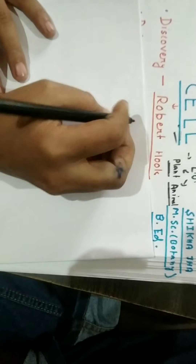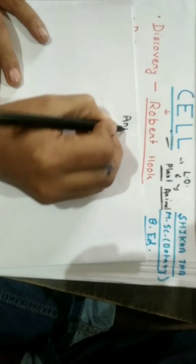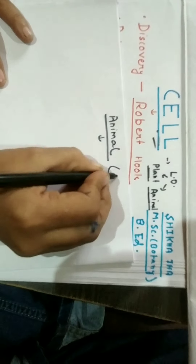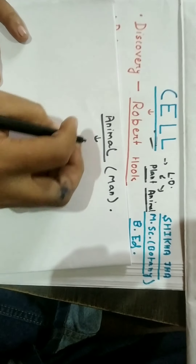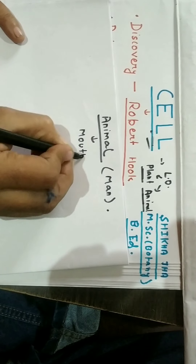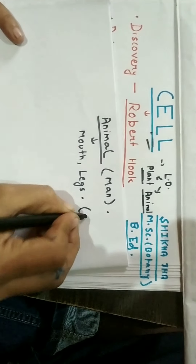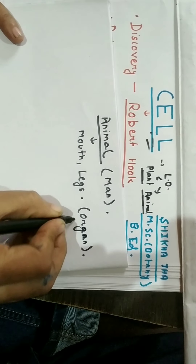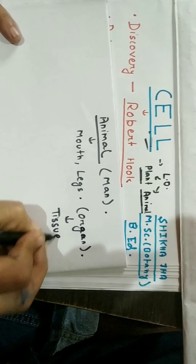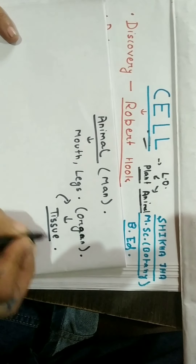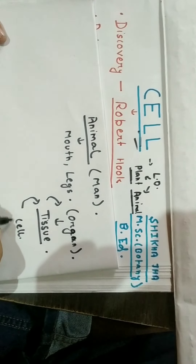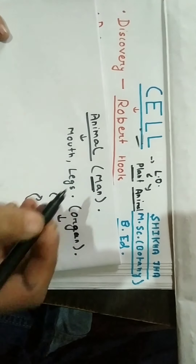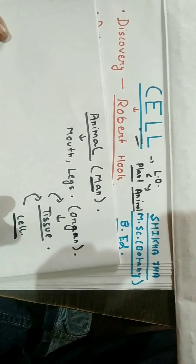For example, if we take any animal — let's take a man — we have mouth, legs, every organ. They are made up of tissues. Many tissues together form an organ. And how is the tissue formed? By cells. So the structural unit of the man, or animal, or any living organism, its structural unit is the cell.